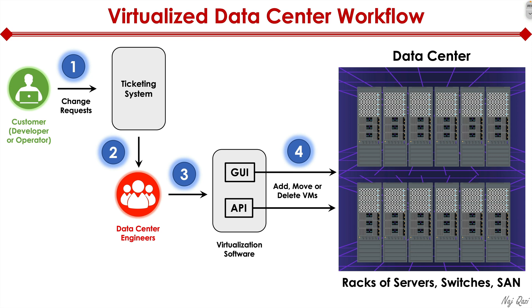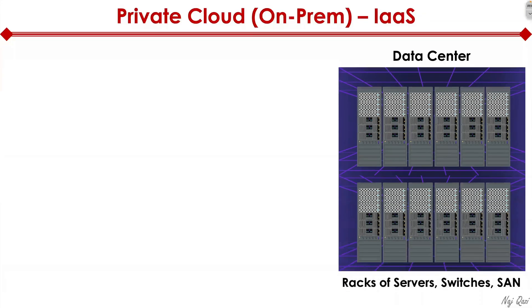What if you have critical team members that are out on vacation? You may be in a world of hurt — things will be really slow, and it may take a month or so for that request to be processed. In today's world, that's not acceptable. So what that led to is a private cloud architecture, which we also call IaaS, or infrastructure as a service.